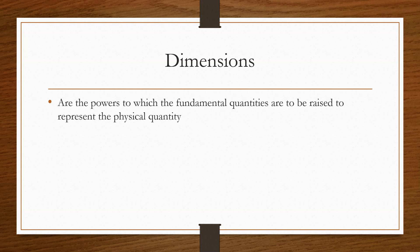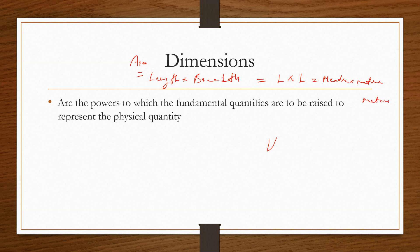For example, we have area. Area means length multiplied by breadth, which equals length times length. Length has a dimension of length squared, that is meter squared. So dimensions are the powers to which the fundamental quantities are raised — this is the dimension of area: meter squared.